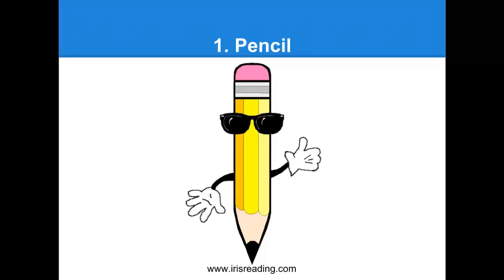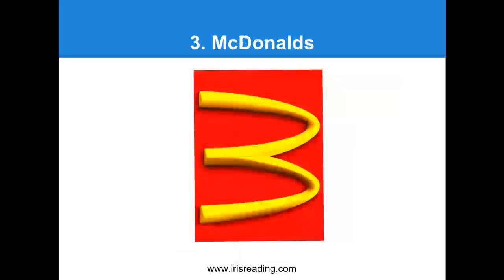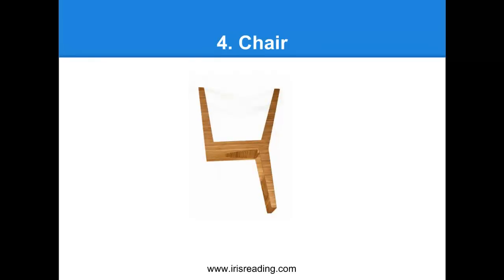Number two is a swan. We're basically asking, what does the number two look like? We use a swan as our visual representation of the number two. Now let's do three — let's imagine the three as McDonald's, tilted sideways of course, so it looks like a number three. Number four is going to remind us of a chair. If we turn the chair upside down, it kind of looks like a four.